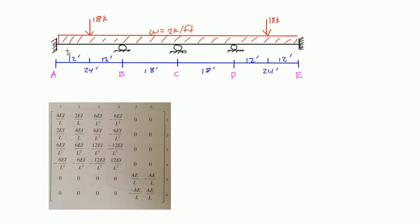Here we have an indeterminate structure. There's a fixed end at both sides, three rollers in the middle, and the dimensions are given in blue. For the loading, we have a two kip per foot uniformly distributed load acting on the entire span of the beam, and then we have two point loads, both 18 kips, acting in the middle of spans AB and DE.